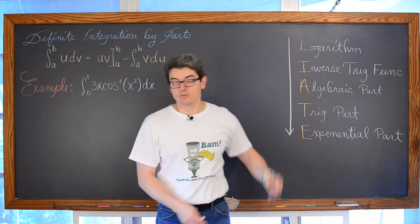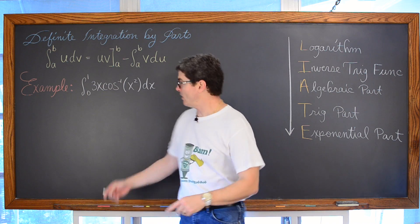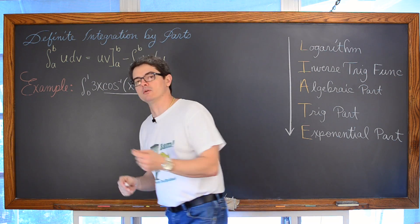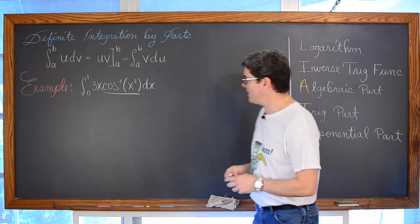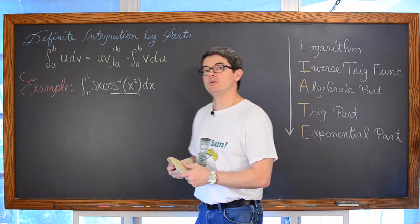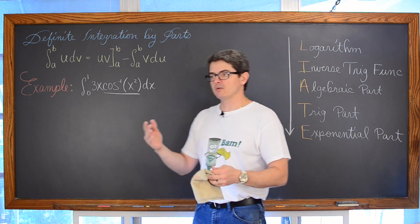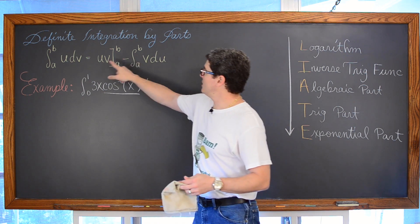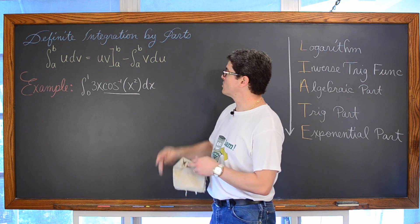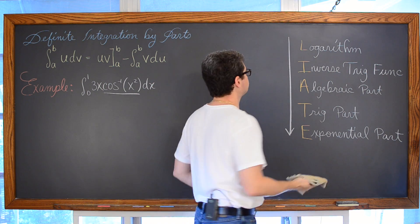Whatever you hit first as you go down this acronym is a suggestion for what to set equal to u. Do we have any logarithms? No. Do we have any inverse trig functions? Yes — we have the inverse cosine or arc cosine of x squared. So let's set that equal to u and see what we get for u, v, and du that we can plug into our integration by parts rule and finish up the problem.